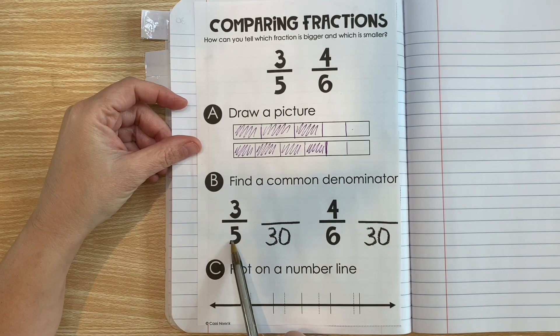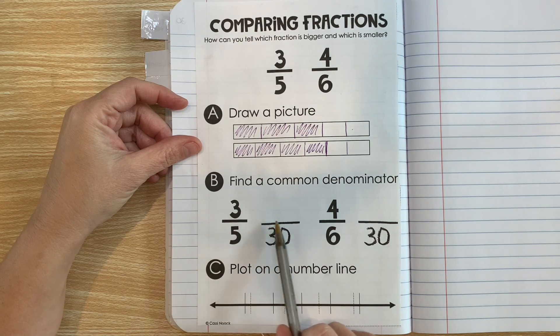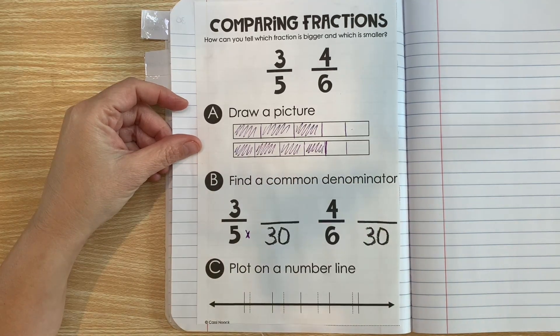So if we can make these have the same denominator, then it's easy to compare and we don't have to draw a picture. If we're creating an equivalent fraction, we had five as a denominator and now we have 30. Well, what did we do to get from 5 to 30?